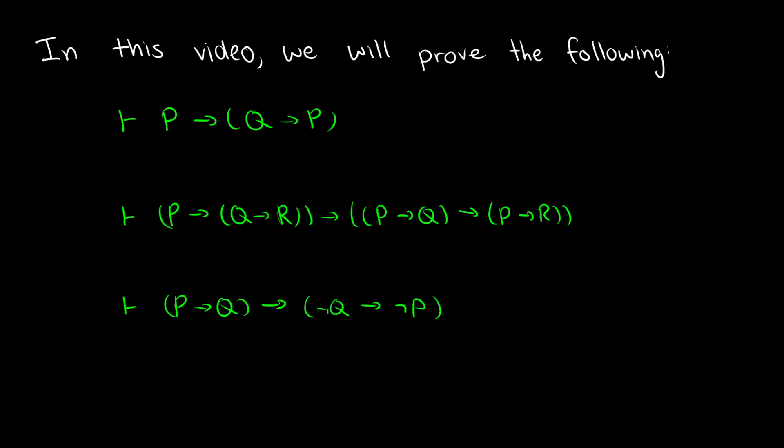In this video we're going to do three more proofs of theorems. We're going to show that P→(Q→P) is a theorem, (P→Q→R)→(P→Q)→(P→R) is a theorem, and (P→Q)→(¬Q→¬P) is a theorem. You'll notice that all of these are conditionals, so we're going to be using a lot of CPs. Hopefully by the end of the video you will be very comfortable with doing CPs and know how to do all of these proofs with conditionals.